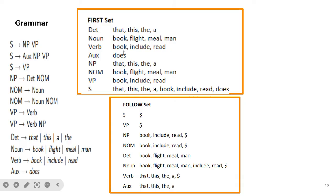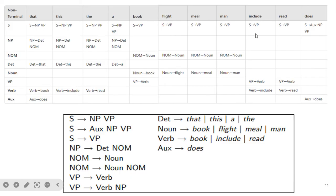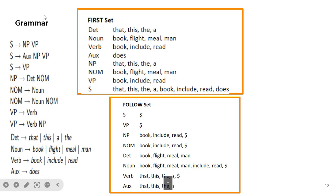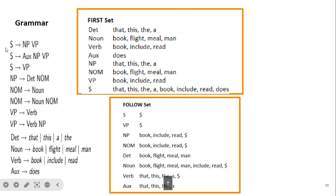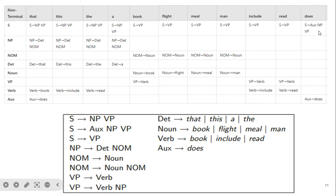After calculating the first and follow sets, we create the predictive parsing table. This is an exercise for you to complete. We check the first set for each non-terminal and based on that make decisions about which rule to enter in which column. For S, three rules exist: when 'does' is the input we follow one rule, when a verb is there we follow S → VP, and for other tokens we follow another rule.